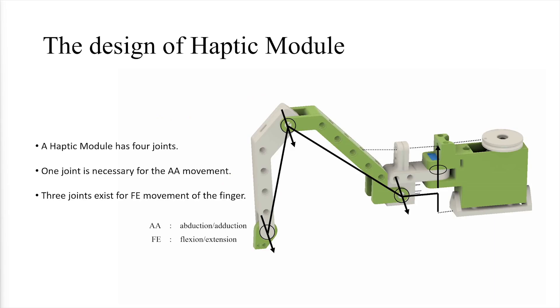Each haptic module is designed with a total of four joints. Among these, one joint is specifically dedicated to the AA movement, or abduction-adduction movement, which is essential for controlling the lateral motion of the finger. The remaining three joints are responsible for the FE movement, flexion and extension, allowing the finger to bend and straighten smoothly during operation.